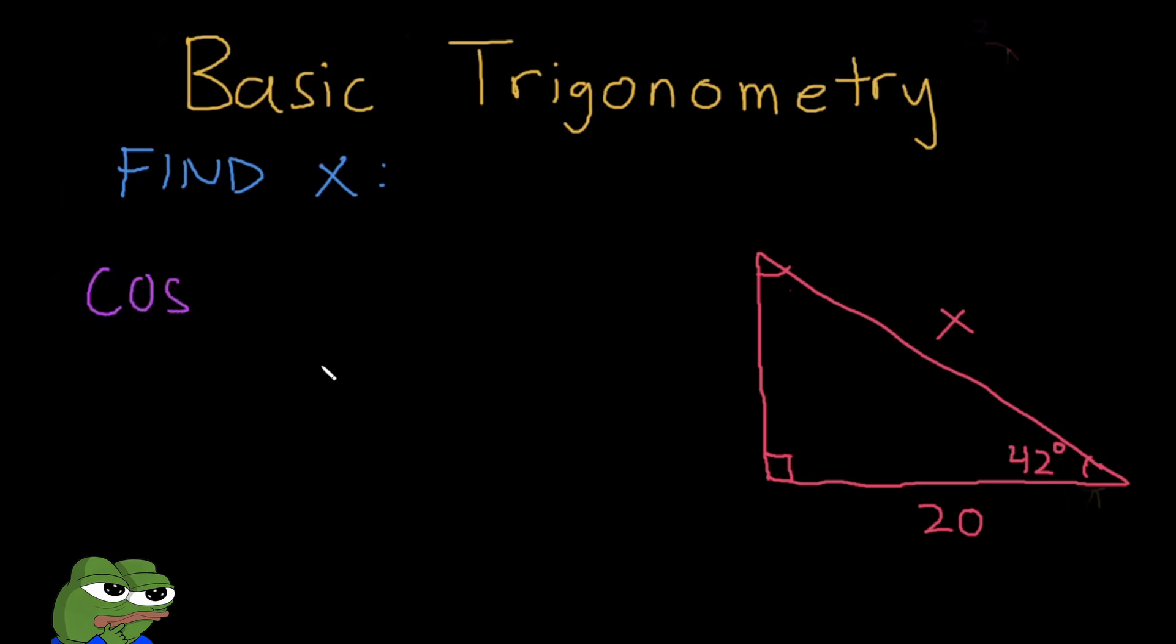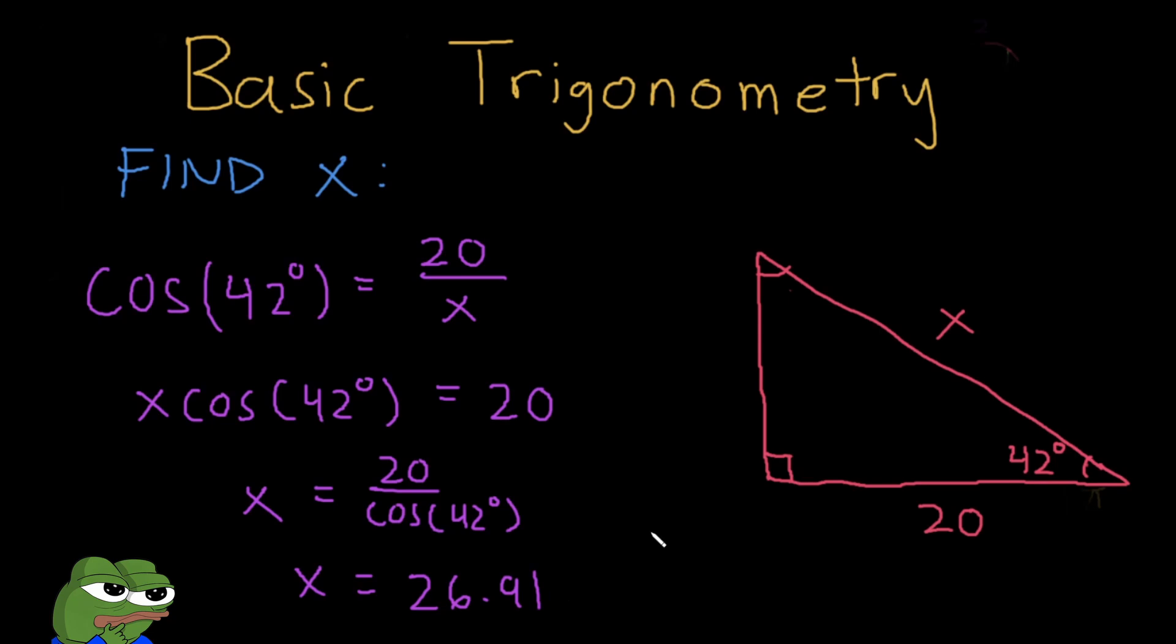I think we can use cosine, because cosine is adjacent over hypotenuse. So let's do cosine of 42 degrees equals the adjacent side over the hypotenuse. Now we just do basic algebra. We multiply both sides by x, so that's x cosine 42 degrees equals 20, and then we divide both sides by cosine 42. So x equals 20 over cosine 42 degrees. Your x would simply be 26.91.